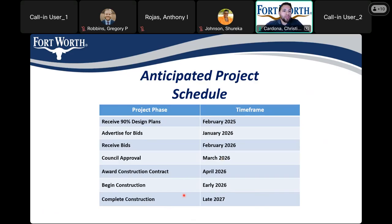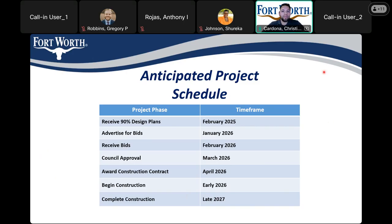This is the anticipated project schedule. We plan to receive 90% design plans in February 2025, advertise in January 2026, receive bids from contractors in February 2026, get council approval in March 2026, award the construction contract in April 2026, begin construction in early 2026, and hopefully complete construction in late 2027. This anticipated schedule assumes that funding is provided for this project.